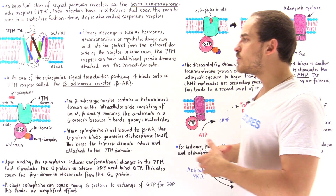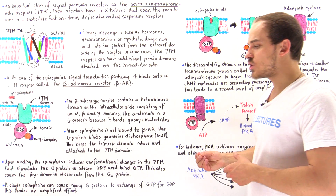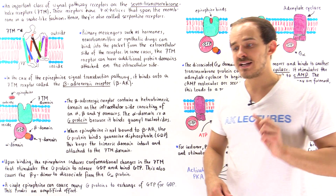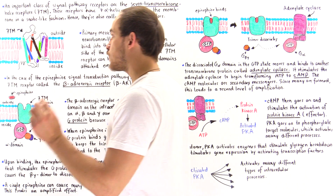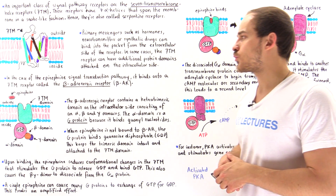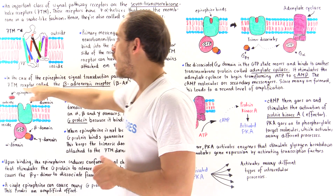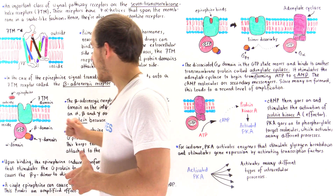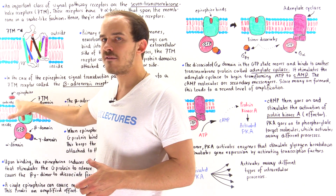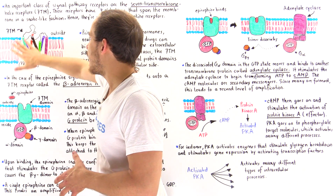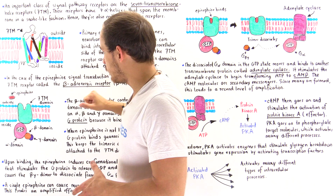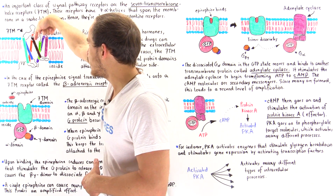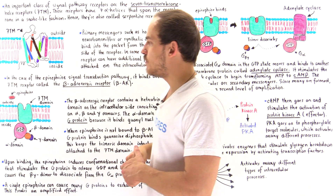Now let's move on to the epinephrine signaling pathway. Epinephrine is the primary messenger and it binds onto a special region of a protein called the beta adrenergic receptor — the beta AR — which is a type of 7TM receptor. The membrane has an outside and inside, and epinephrine (shown in red) binds into a pocket on the extracellular side of the 7TM domain.